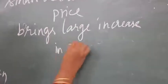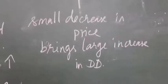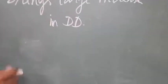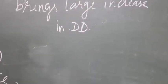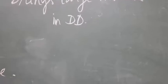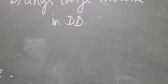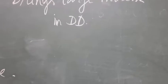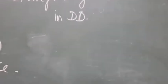This is elasticity of demand. There are six types of elasticity of demand — equal to 1, less than 1, more than 1, and more — which we will see in the next video.